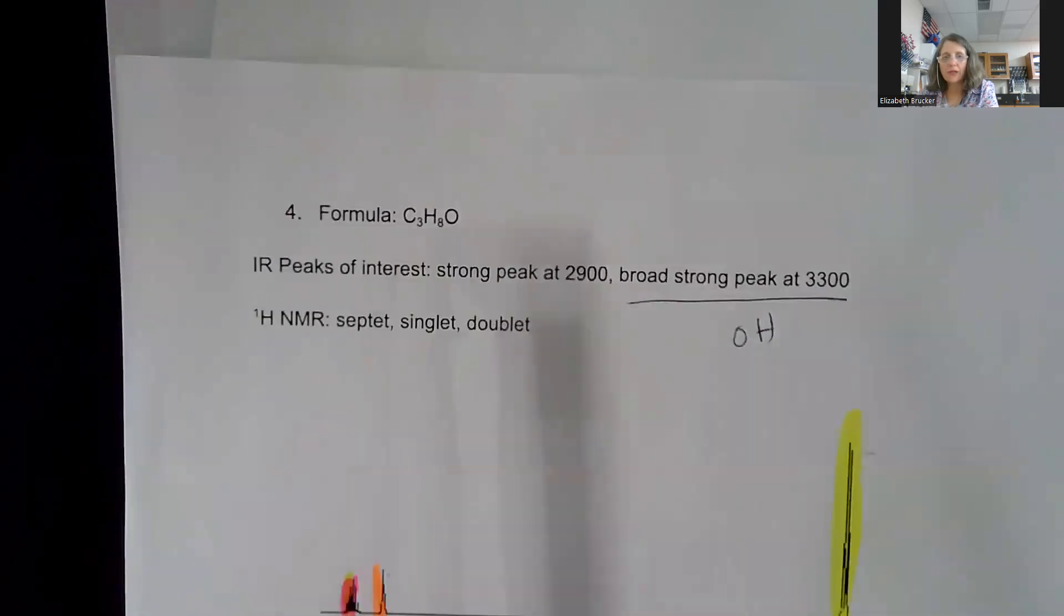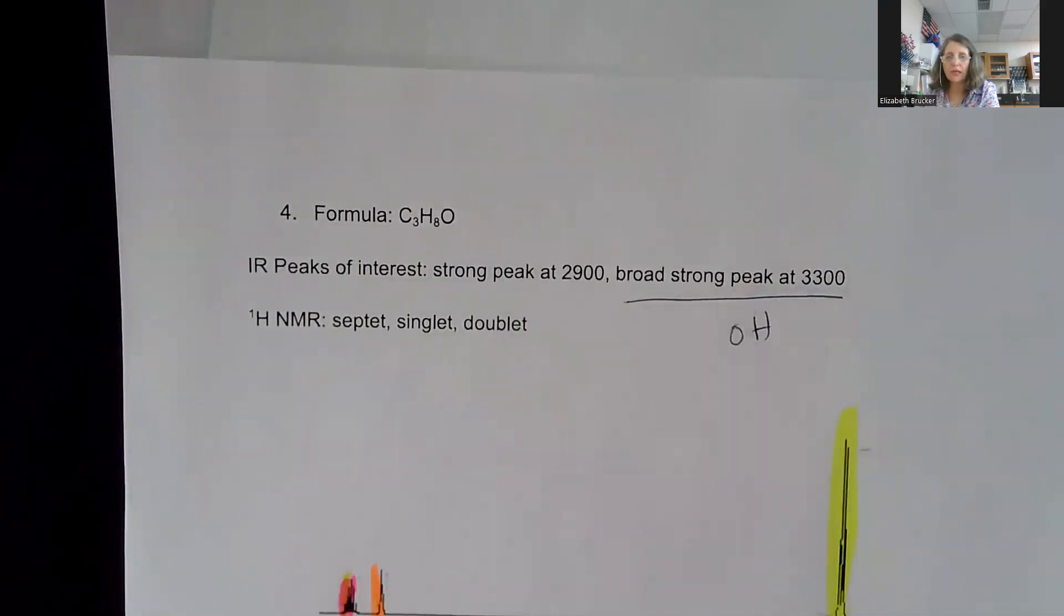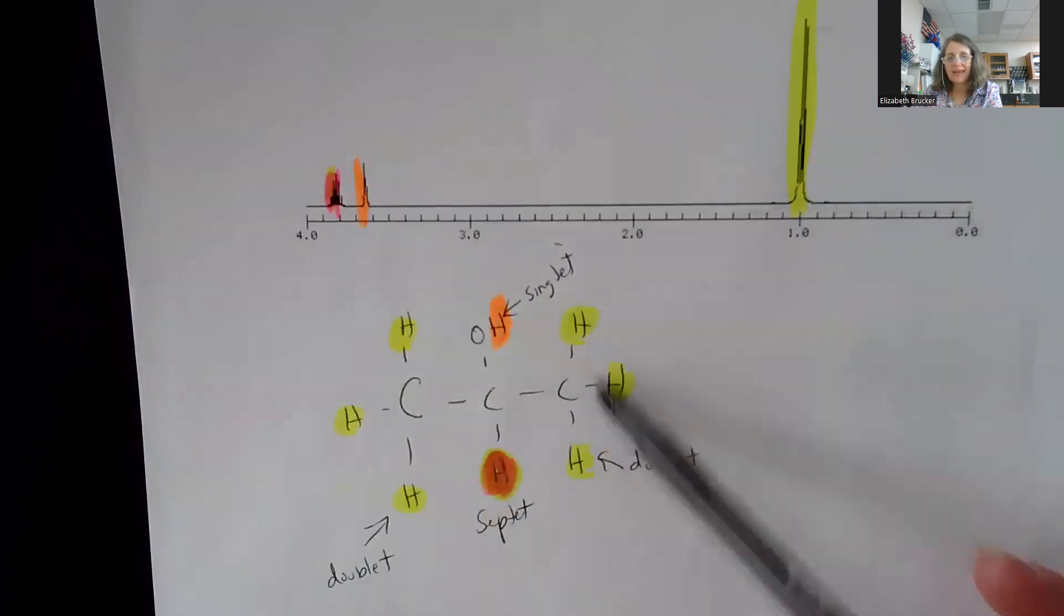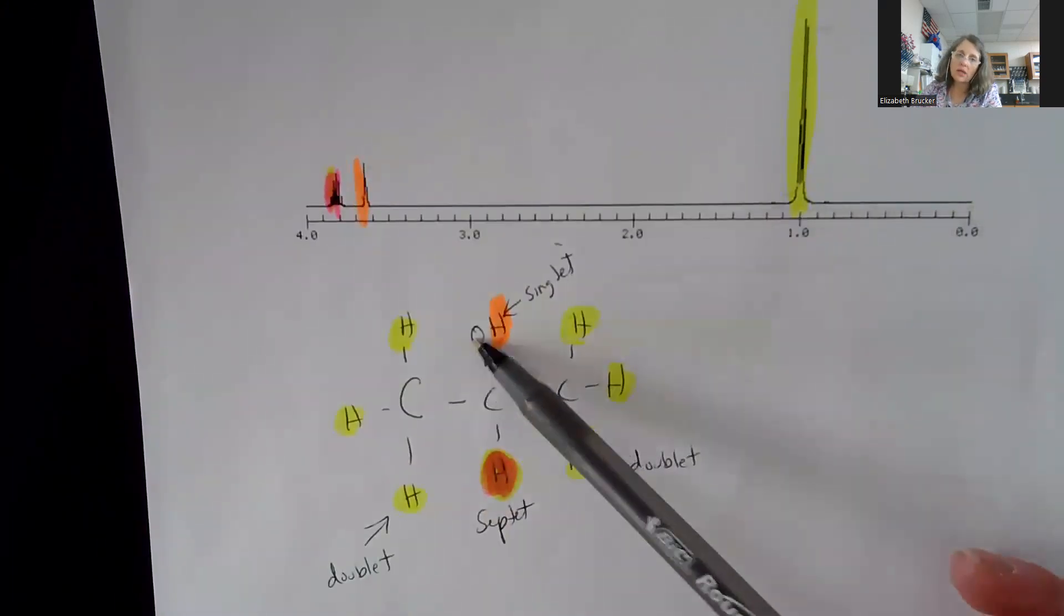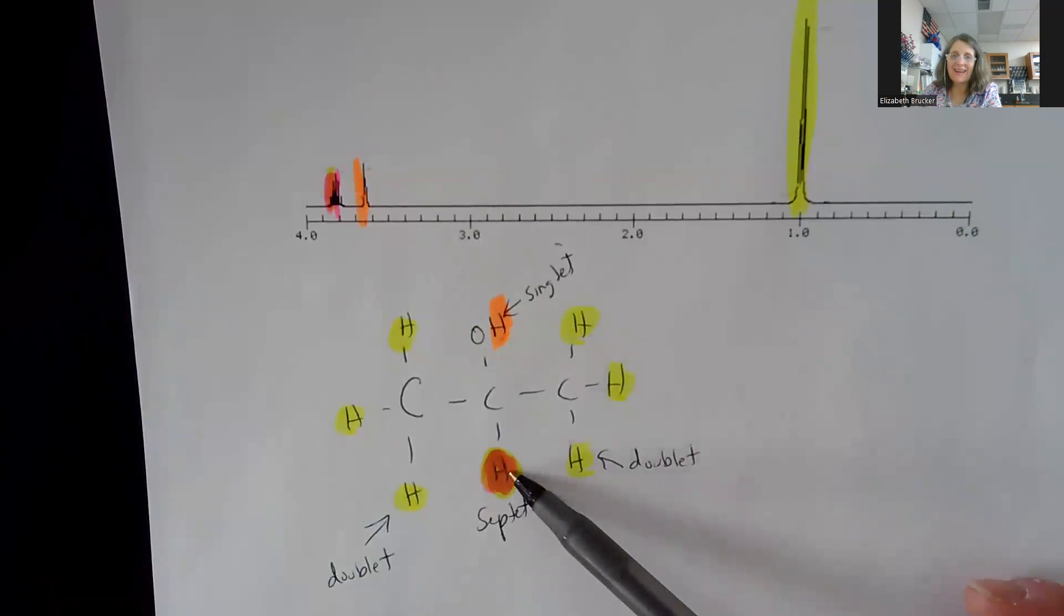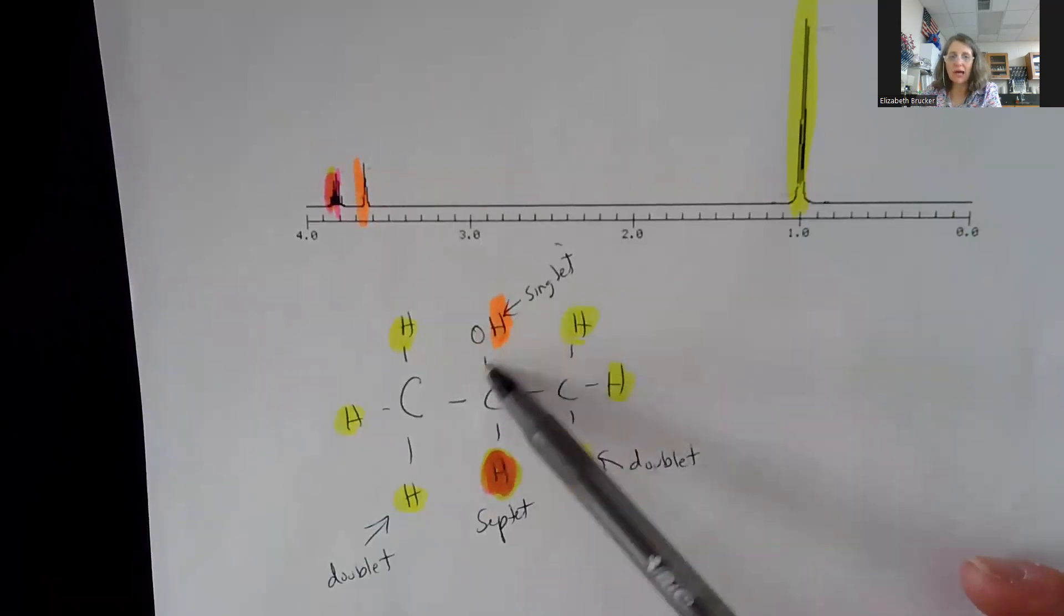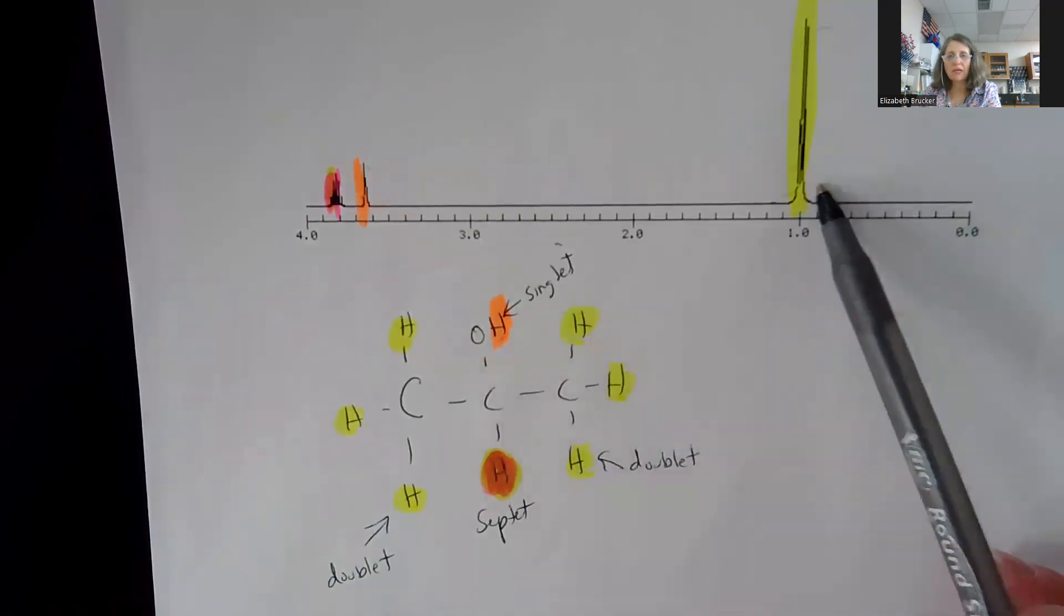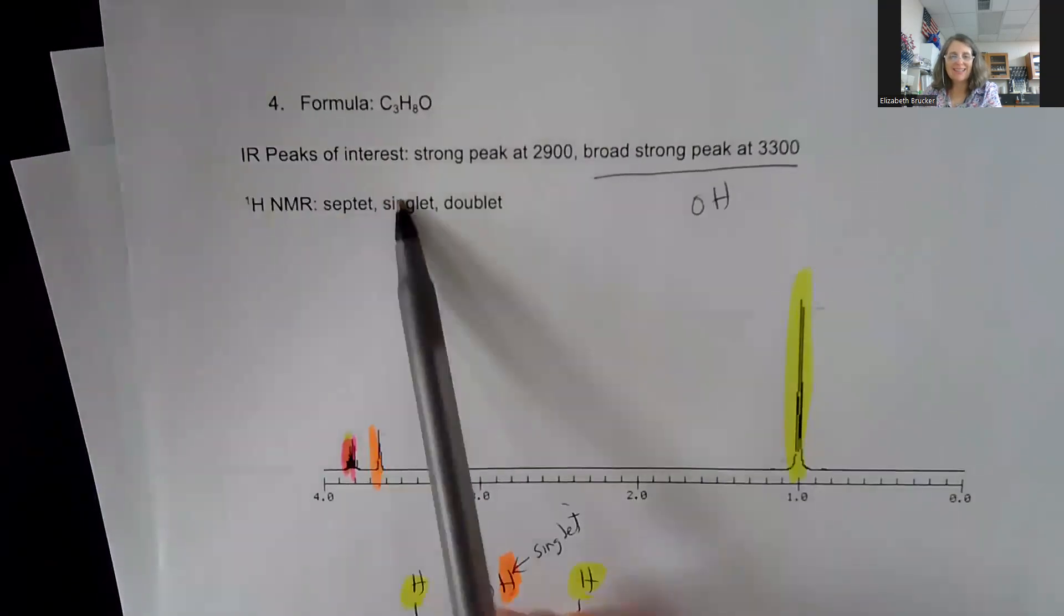And finally, number four. I did the formula already for you. I have a broad strong peak at 3,300. So that's telling me I have an OH. So putting it maybe in the middle to start, but you could put it on the ends. It doesn't really matter. So I have a doublet here, which is traditionally on the end of the molecule. Think of that OH as being blocked. So this could be a doublet because I only have one H that it's seeing because this is being blocked by the oxygen. If you want to put an X there, you could do that. So this has got to be your doublet.